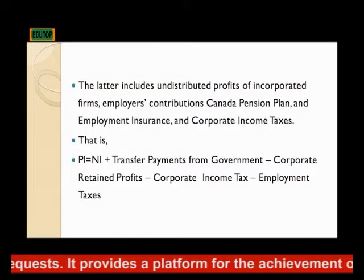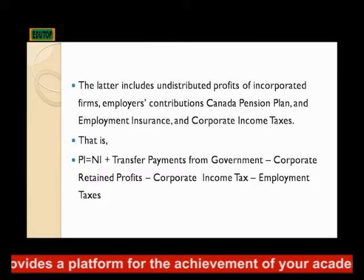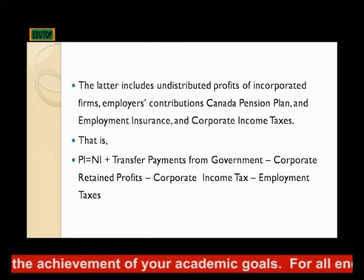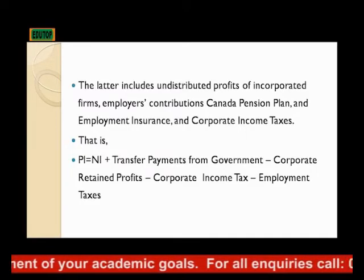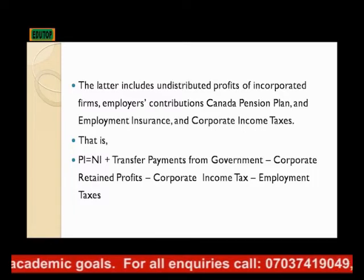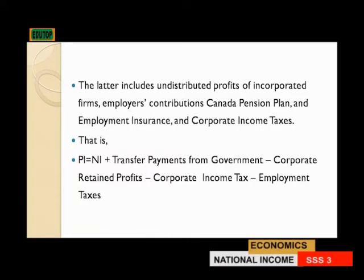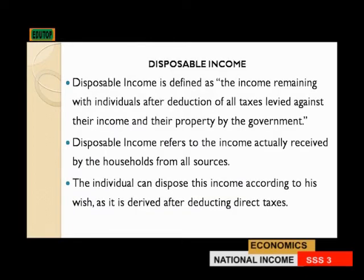Other sources of income to a person, regardless of status, are referred to as personal income. This excludes undistributed profits of incorporated firms, employers' contributions, and so on — those are not part of personal income. The way to calculate personal income is by adding national income plus transfer payments from government, minus corporate retained profits, corporate income tax, and employment tax.